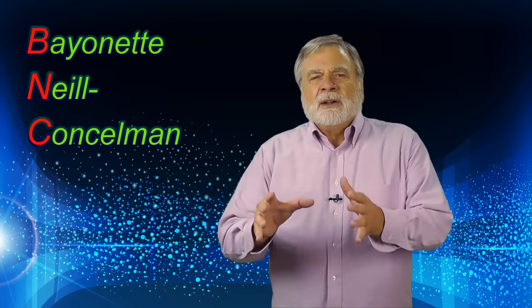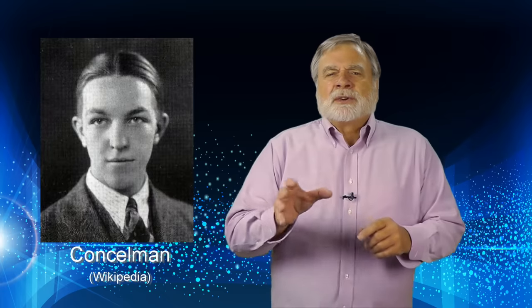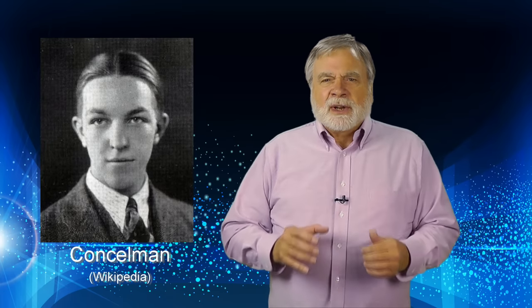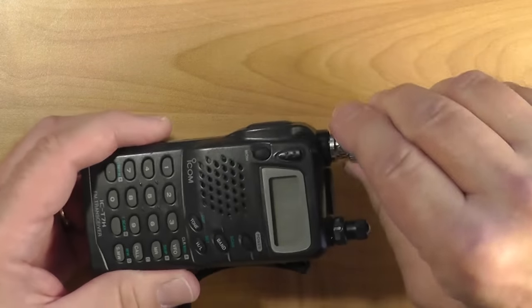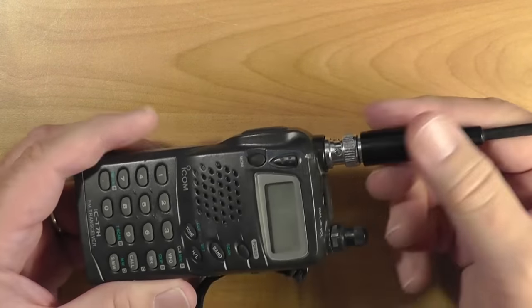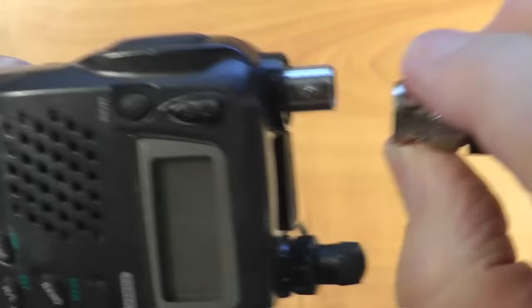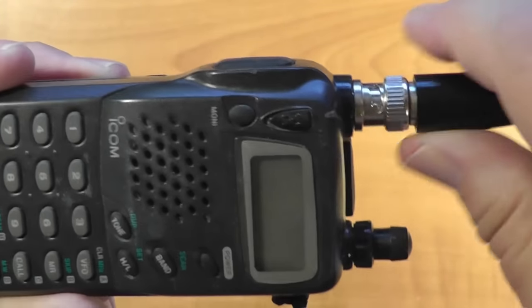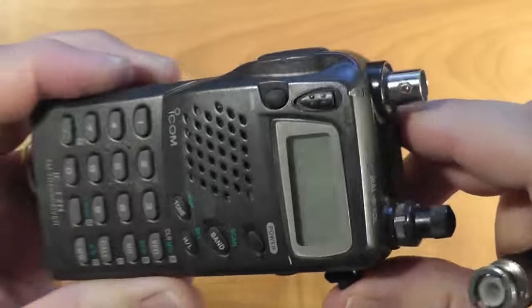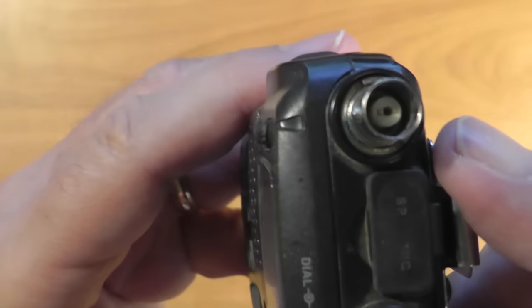The next most common connector you'll find is the BNC connector. It's a bayonet connector. The initials come from Bayonet Neil Consulman, named after the two inventors at AT&T long ago. I have a picture here of Carl Consulman, taken in 1929 when he was 17. Here's an example of an ICOM handheld radio, an ICT7H, that has a BNC connector that connects the antenna. The key advantage of the BNC system is that it takes only a quarter turn to connect or disconnect.